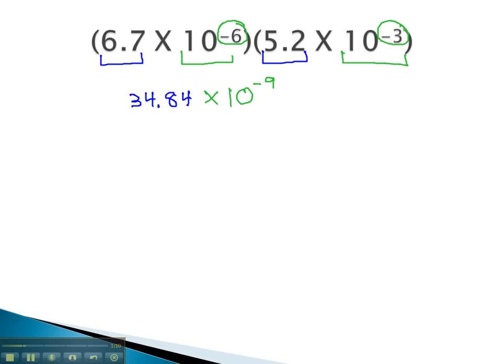We now have 34.84 times 10 to the negative 9th. However, the 34.84 is not in scientific notation. The decimal point should go after the 3. So we focus on this number and look at how we can convert it to scientific notation. 3.484 times 10. We need a positive exponent because 34 was a big number, and we move the decimal 1 place.